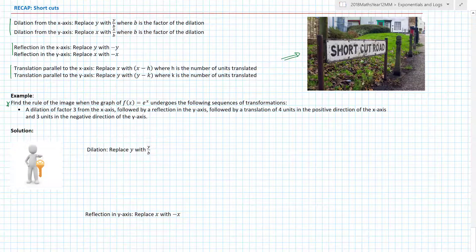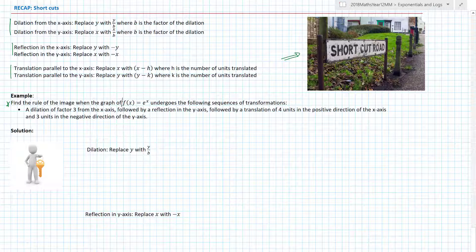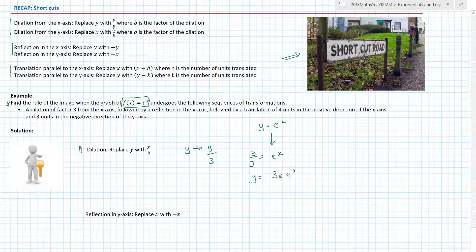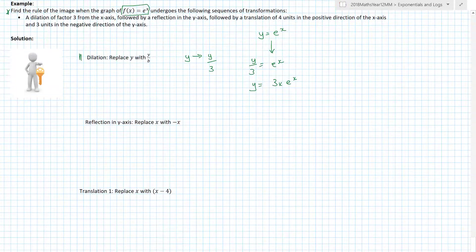Find the rule of the image of the graph - so this tells you the original function is y equals e^x - undergoes the following sequence of transformations. So they've given you a sequence. The first one is a dilation of factor three from the x-axis. So dilation - dilation from the x-axis tells you to replace y with y/b. So I want to replace y with y/3. Is that a factor three? Yep. So that's literally what I'm going to do. There is my equation. I'm now going to make that y/3 equals e^x. So y now becomes 3e^x. I could write it as 3e^x. I'm going to put 3 times e^x just so that I remember it is a dilation away. So that's the first one done.